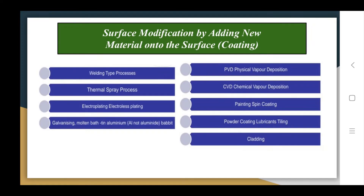Before going to the principles of coating technology, we should know the different processes belonging to surface modification by adding new material onto the surface — that is, surface coating. These include welding-type processes, thermal spray processes, electroplating, and advanced coating technologies such as PVD (Physical Vapor Deposition), CVD (Chemical Vapor Deposition), painting, powder coating, and cladding.